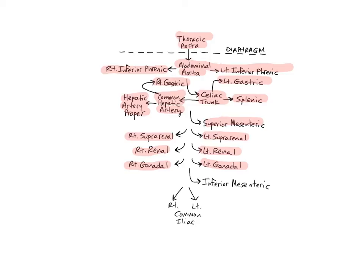The inferior mesenteric artery is the last of the unpaired branches of the abdominal aorta, arising from the front of the aorta near L3, and moving to the left where it forms extensive anastomoses and several branches that supply the remainder of the large intestine, including the transverse colon, descending colon, sigmoid colon, and the upper part of the rectum.